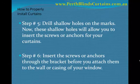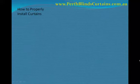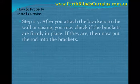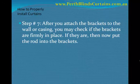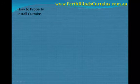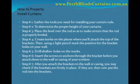Step number six, insert the screws or anchors through the bracket before you attach them to the wall or casing of your window. Last but not the least, after you attach the brackets to the wall or casing, you may check if the brackets are firmly in place. If they are, then put the rod into the brackets. Now, if anything should go wrong, you may retrace these steps to find out what you may have done incorrectly.